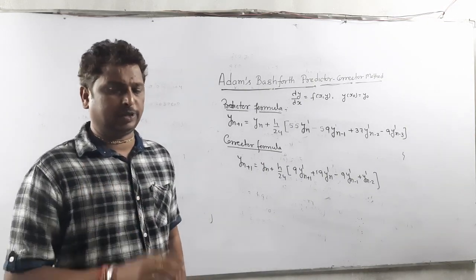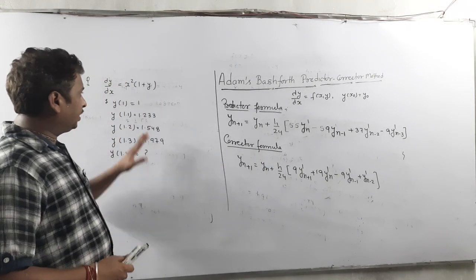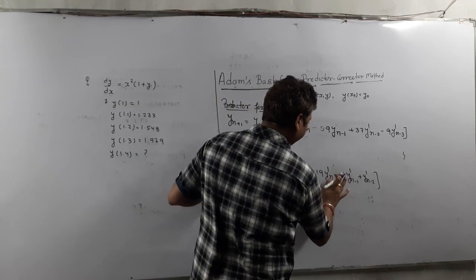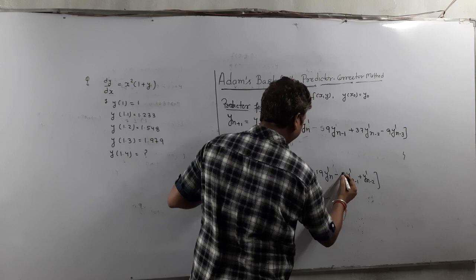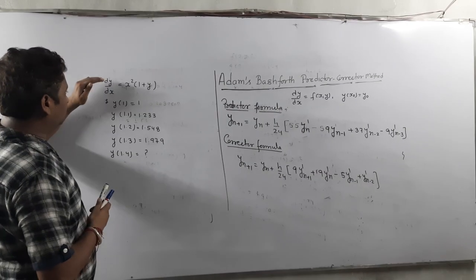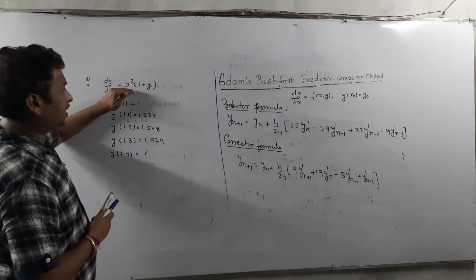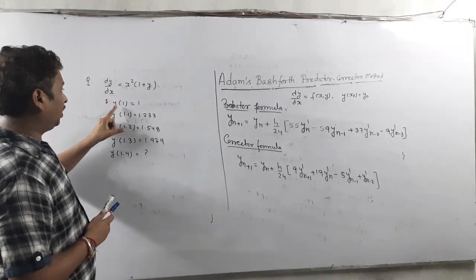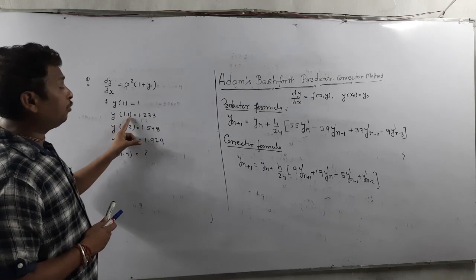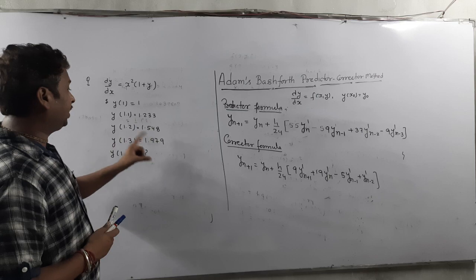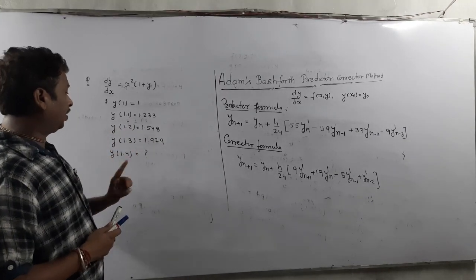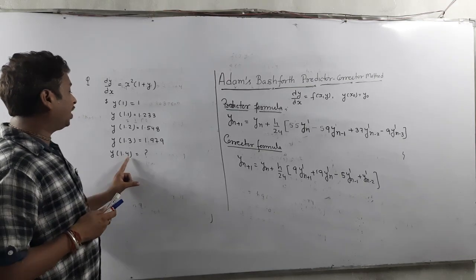We are going to solve this question. The equation is dy/dx = x²(1 + y). The initial conditions given are: y at 1 is 1, y at 1.1 is 1.233, y at 1.2 is 1.548, y at 1.3 is 1.979. And they ask you to find y at 1.4.